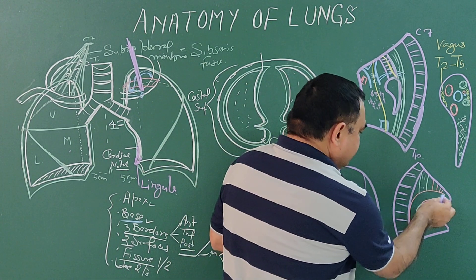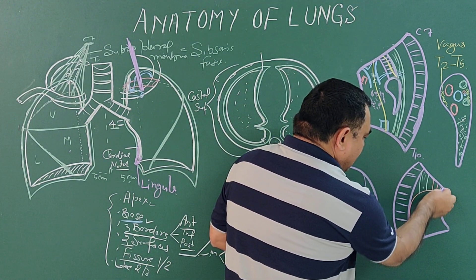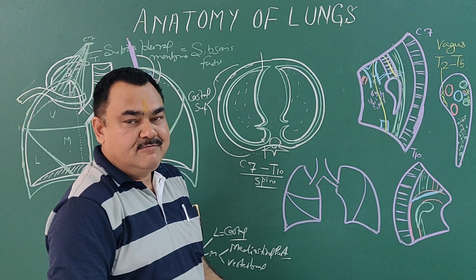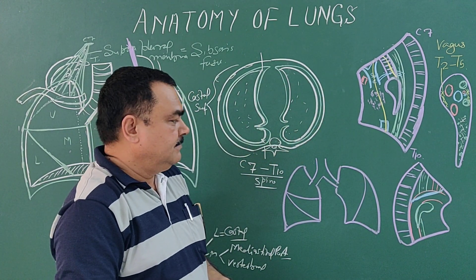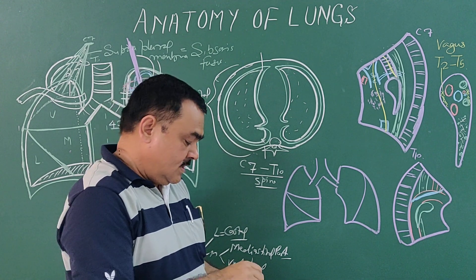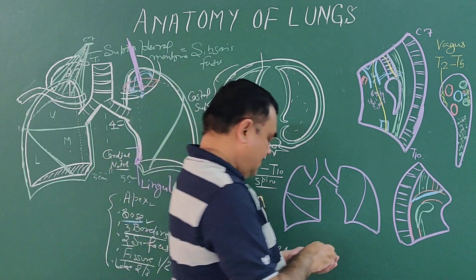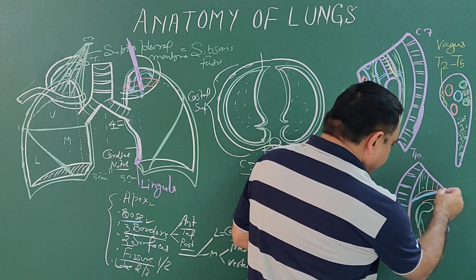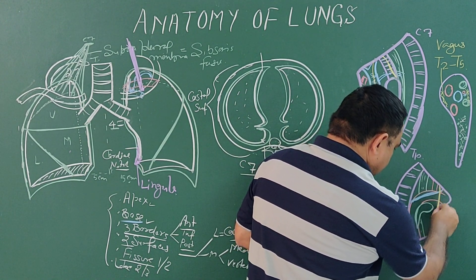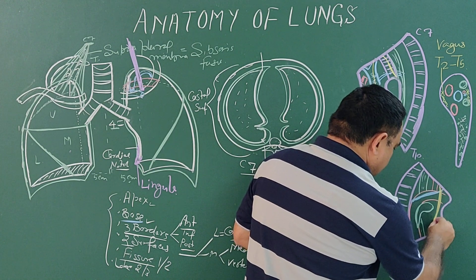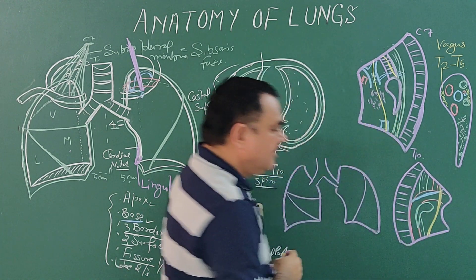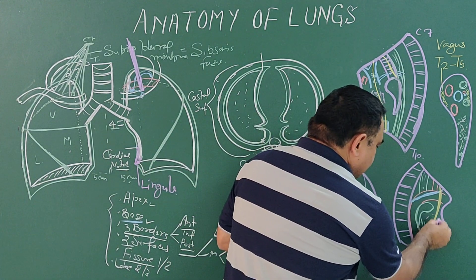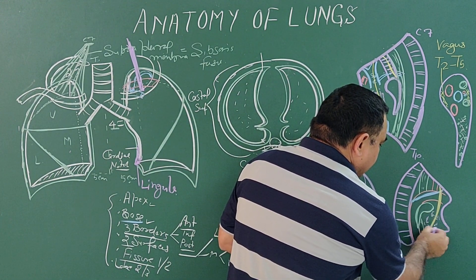Here is the left superior intercostal vein. And if you see the nerves, here is the position of the left phrenic nerve.